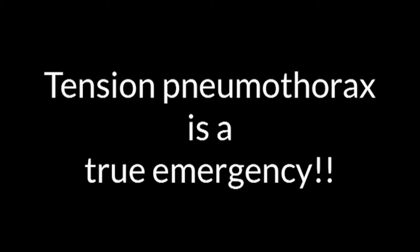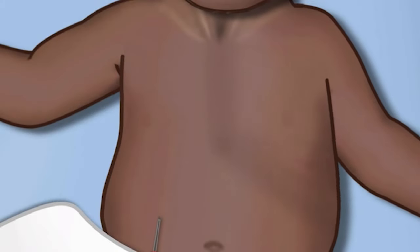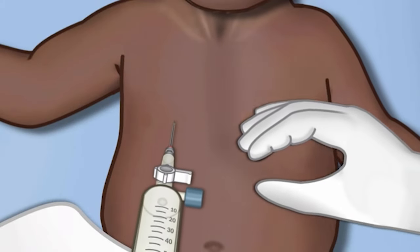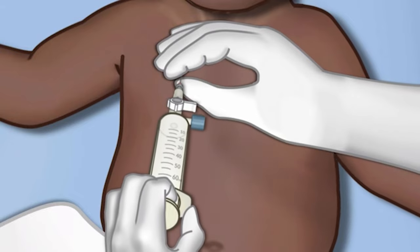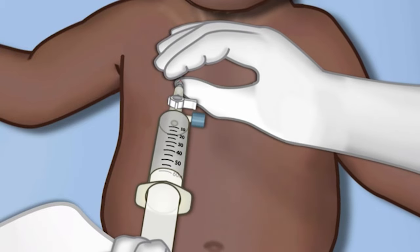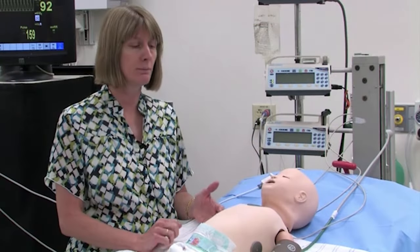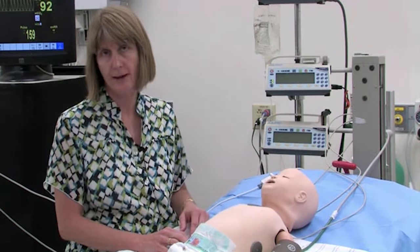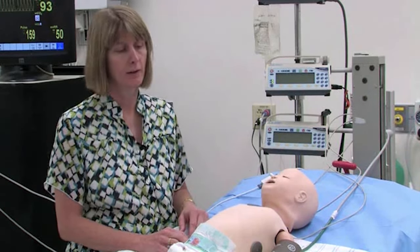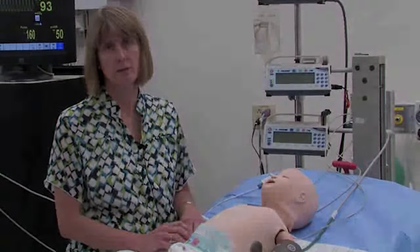There will also be hypotension and poor perfusion because the heart isn't filling and therefore not ejecting. A tension pneumothorax is a true emergency that must be treated with decompression of the pleural space, but recognizing it early may help you treat it in a more controlled fashion and also prevent progression to cardiac arrest.